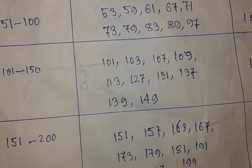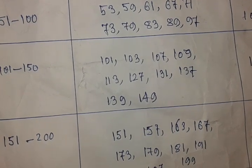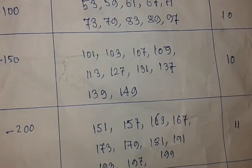And another 101 to 150, there are 10 prime numbers: 101, 103, 107, 109, 113, 127, 131, 137, 139, and 149.